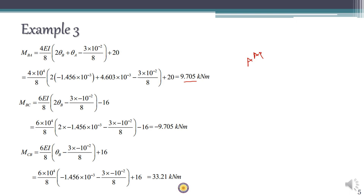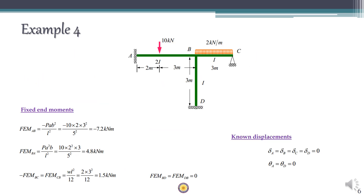Now let's extend from beams to frames. The specialty of this frame is that it is a non-sway frame, meaning it cannot move horizontally. It is restrained by a fixed support at one point and a hinge at another point, which does not allow horizontal displacement. In the next lecture we will see more about sway and non-sway mechanisms.